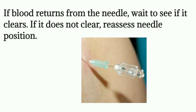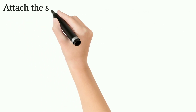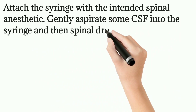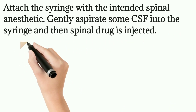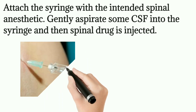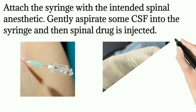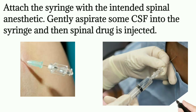Once CSF backflow is confirmed, attach the syringe containing the spinal anesthetic drug. Gently aspirate some CSF into the syringe to confirm position, then inject the spinal drug slowly. Load the drug in the 5ml syringe, attach it to the spinal needle, lightly aspirate to check CSF backflow, then inject the spinal drug slowly.